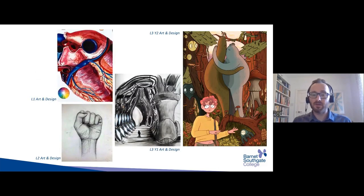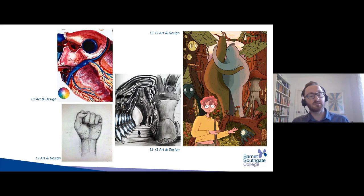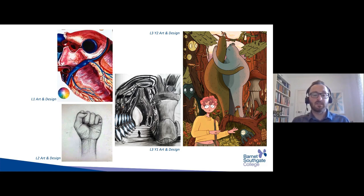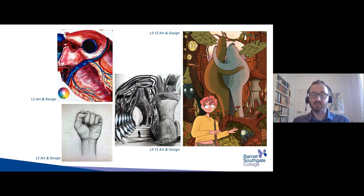We have examples of student work produced this year — some made at college before March, and some produced since students started working from home. You can see examples from level one, level two, level three year one, and level three year two. The standard of work varies as the level of qualification increases, but what we're looking for from students is commitment, because not everybody excels in every area. Some might be good at one area, some at another, and as you progress through the levels, that tends to improve across the board.